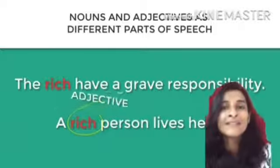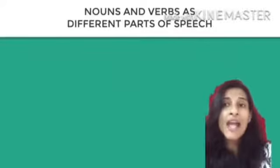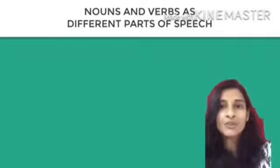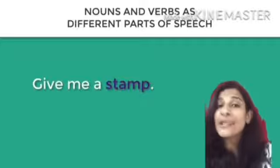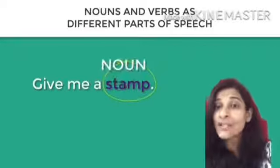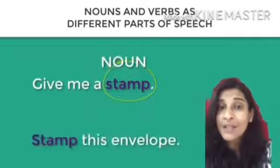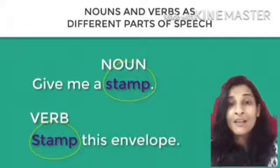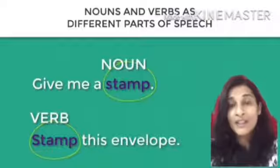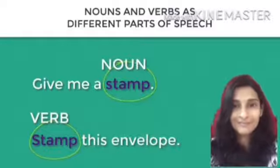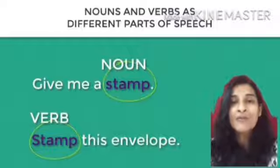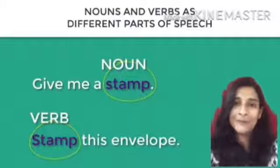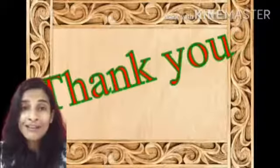Now let's see examples of nouns and verbs as different parts of speech. 'Give me a stamp' — here stamp is the name of an object, so it's a noun. 'Stamp this envelope' — here we are asking someone to perform an action, so stamp is acting as a verb. Are you all clear about how the same word can come under different parts of speech?